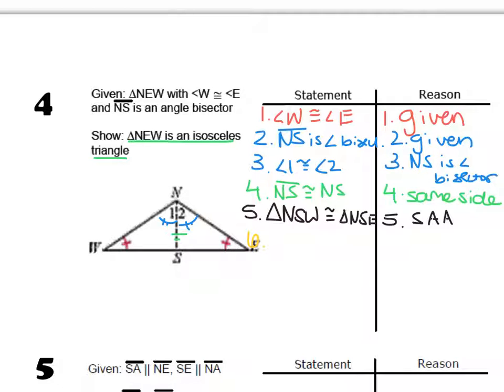My next step then would be to say NW is congruent to NE because corresponding parts of congruent triangles are congruent.